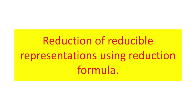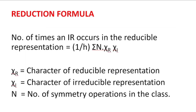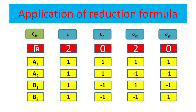Let us practice the reduction of reducible representations using the reduction formula. The formula is: the number of times an irreducible representation occurs in a particular reducible representation equals one upon h, into the summation of n·χᵣ·χᵢ. Here χᵣ is the character of the reducible representation, χᵢ is the character of the irreducible representation, and n is the number of members present in a class, or number of symmetry operations in the class.